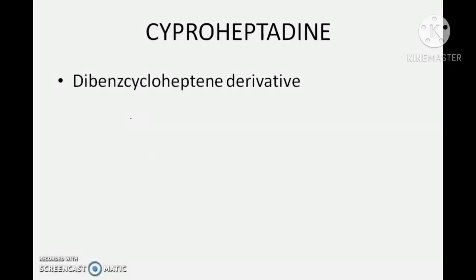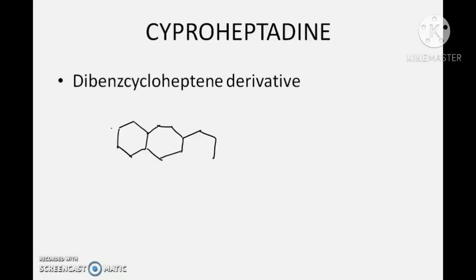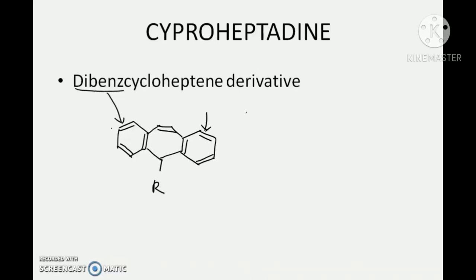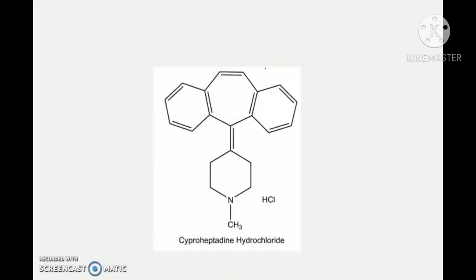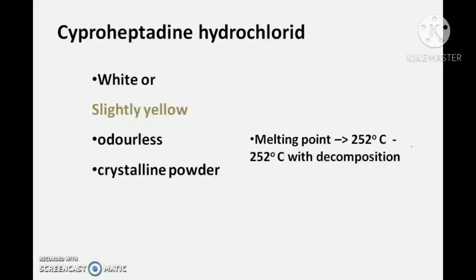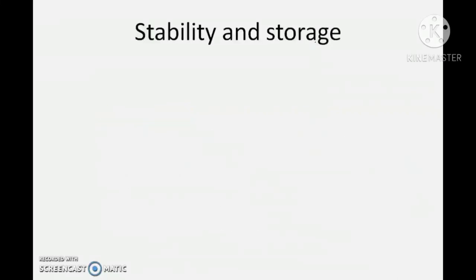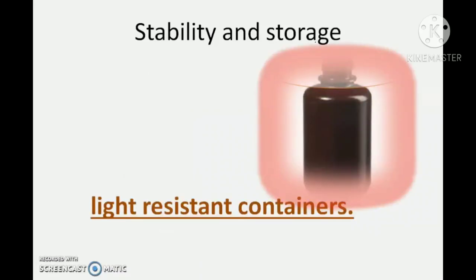The next class of drug is Cyproheptadine, a dibenzocycloheptene derivative. Heptene stands for a 7-carbon cyclic compound, and it also carries two benzene rings — two benzene rings on either side of a cycloheptene gives a dibenzocycloheptene ring. Cyproheptadine is a white or slightly yellow odorless crystalline powder with a melting point of 252 degrees centigrade, at which it undergoes decomposition. It is affected by light and should be stored in well-closed light-resistant containers.